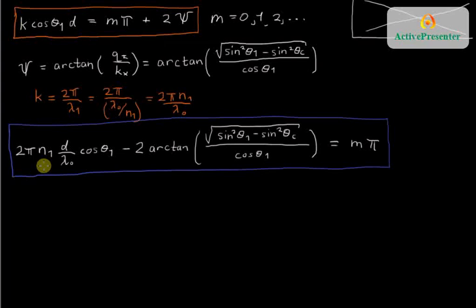All of these terms are on the left-hand side, and this can be thought of as some function of the index contrast, n1 and n2, and the thickness d, and the wavelength of the light in air, and the angle at which the light is coming in, θ1.